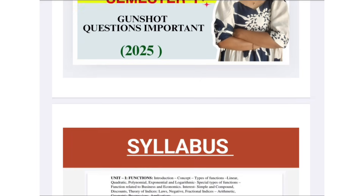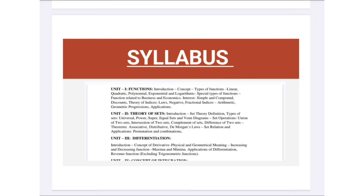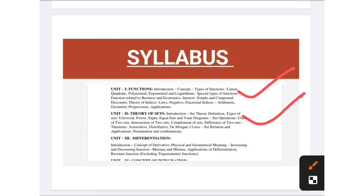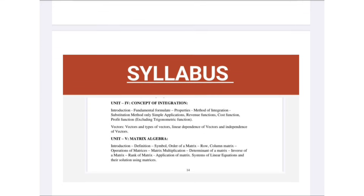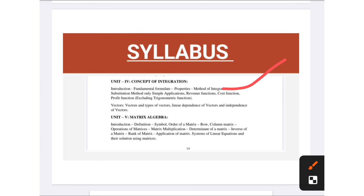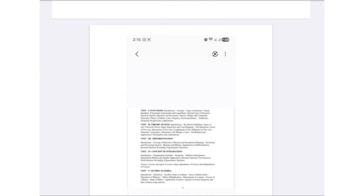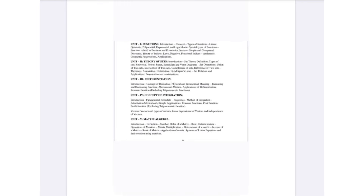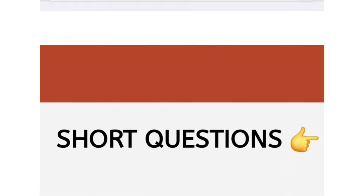Coming to the syllabus — as per the latest syllabus, the first unit is functions, second unit is theory of sets, third unit is differentiation, fourth unit is concept of integration, and fifth unit is matrix algebra. This is the latest syllabus as you can see on the screen — the official syllabus picture released by Osmania University.